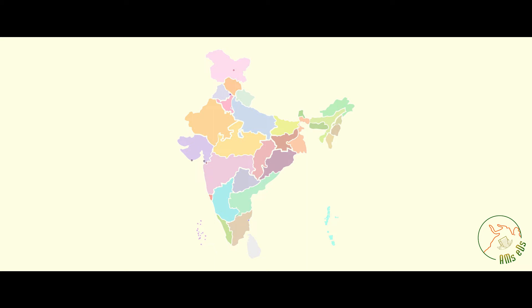While Indus is the west flowing river, the others, i.e. the Ganga and the Brahmaputra, are east flowing rivers. You might notice that these major rivers have branches or tributaries joining them. Together with these tributaries, we call each one a river system. Thus, we have the Indus river system, the Ganga river system and the Brahmaputra river system. Let's begin with the study of the Ganga river system as it is the longest, with the plain being the world's largest river basin.